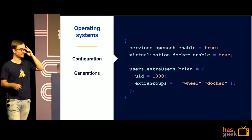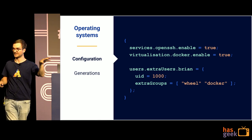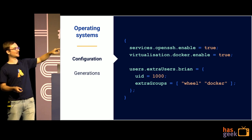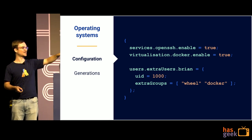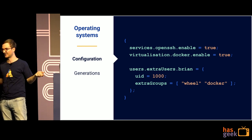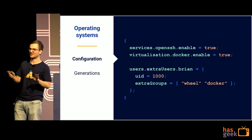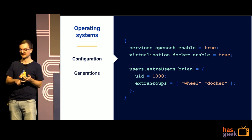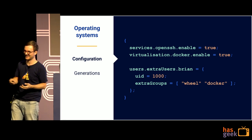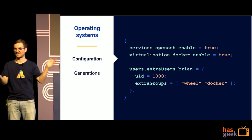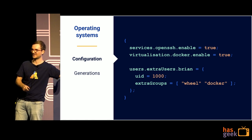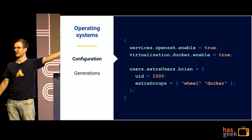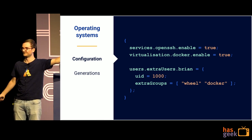This is a partial configuration of my system — what I'm running right now. For example, I have Docker enabled, OpenSSH enabled, and I've got a Brian user with a UID. There's a lot more: I've got Xmonad as a window manager, a heap of different system packages installed like wget, firewall rules — all defined using the Nix programming language to fully specify my operating system, which I think is pretty cool.